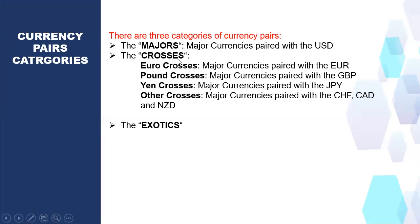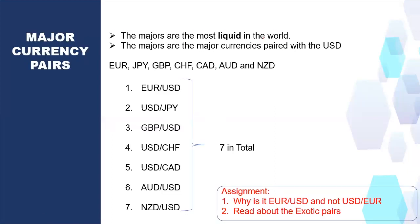The difference between Majors and Crosses: the Majors are a major currency paired with the US dollar. When you pair a major currency with another major currency (not the US dollar), it's a Cross. The third category is Exotics — and that's your assignment: what are exotic pairs?